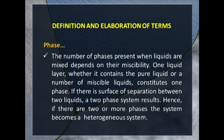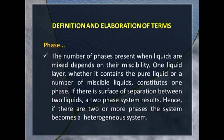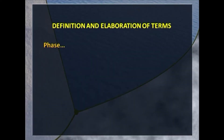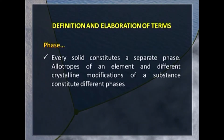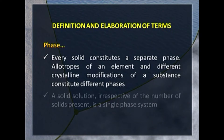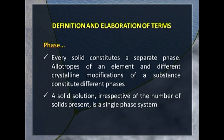However, if the two liquids are immiscible, there will be a separation demarked by a boundary, and it becomes a two-phase system. Heterogeneous systems will have two or more phases; if there is only one phase, the system is homogeneous. In the case of solids, every solid constitutes a separate phase including allotropic modifications. But in the case of a solid solution, irrespective of the number of solids involved, it will be only one phase.